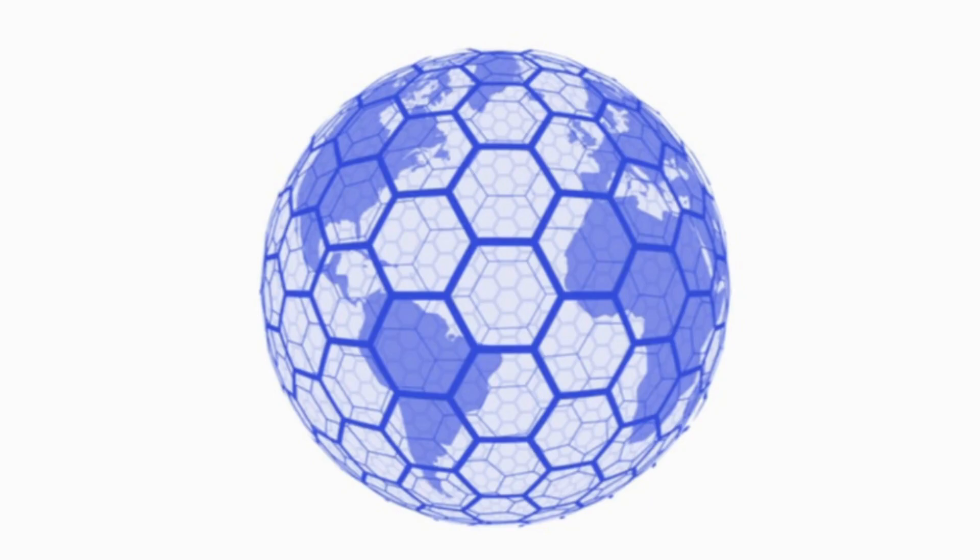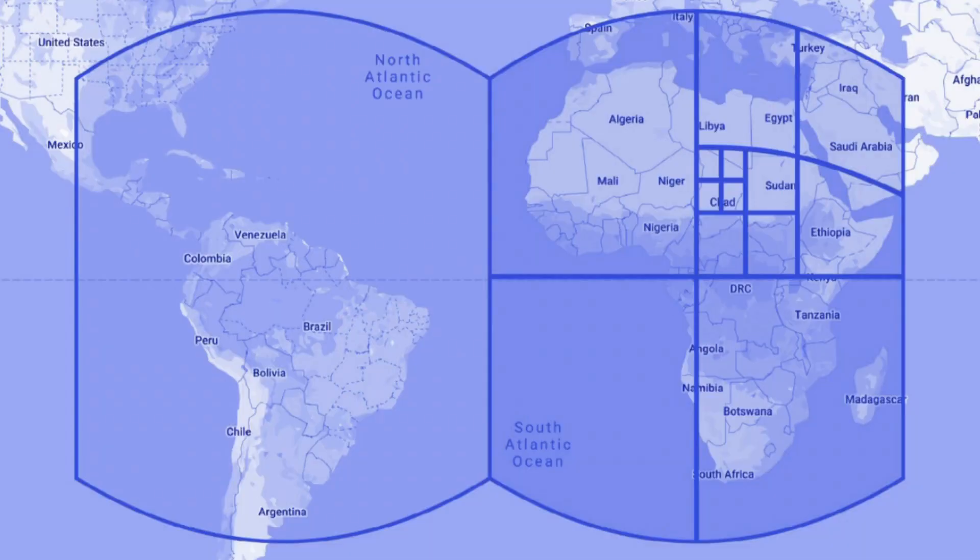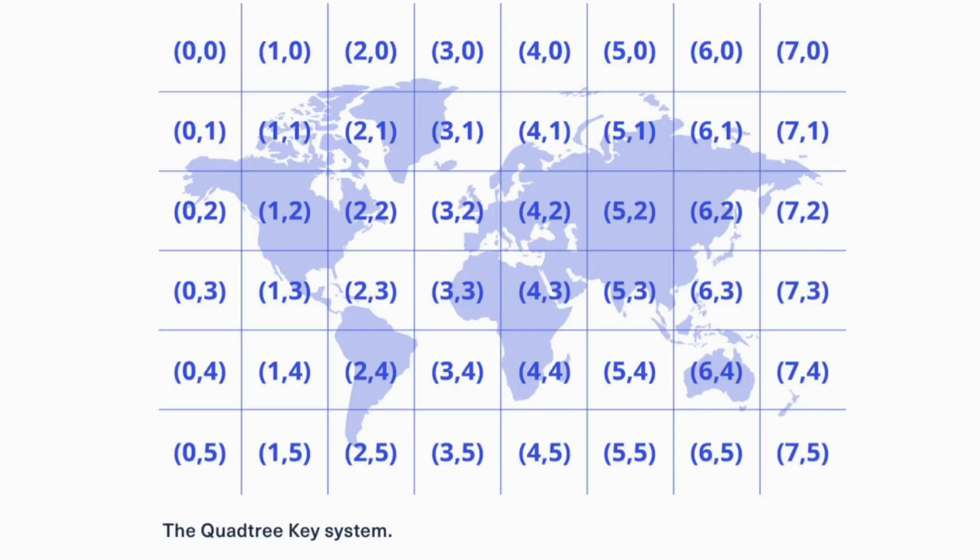There are really three types of spatial indexes that are popular right now: H3, which is popularized by Uber and is now an open source project; S2, which is popularized by Google; and finally Quad Bins, which are popularized by Microsoft and Bing Maps when it started out. There's no right or wrong spatial index to choose — it really depends on your use case, and there are a lot of different factors that weigh into this.